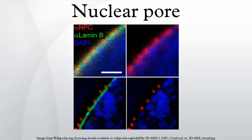The proteins that make up the nuclear pore complex are known as nucleoporins. About half of the nucleoporins typically contain solenoid protein domains — either an alpha solenoid or a beta propeller fold, or in some cases both as separate structural domains.